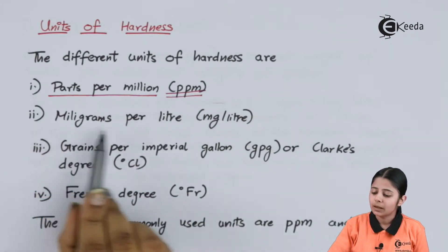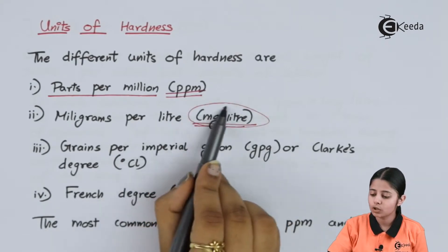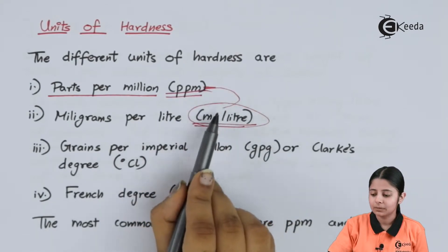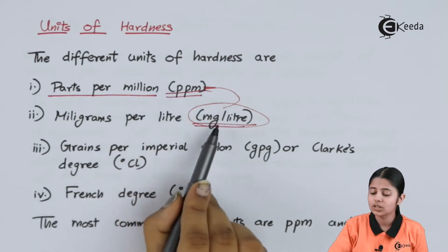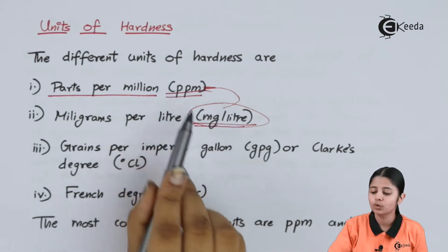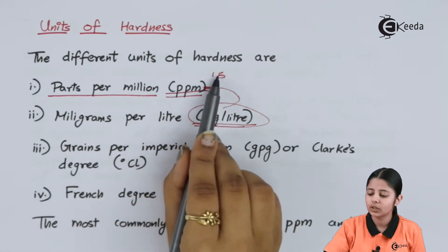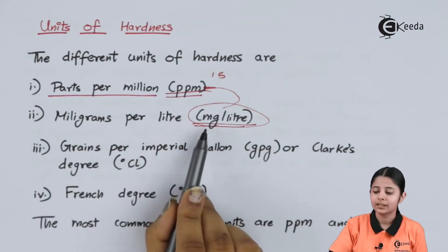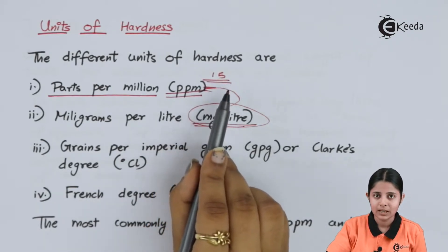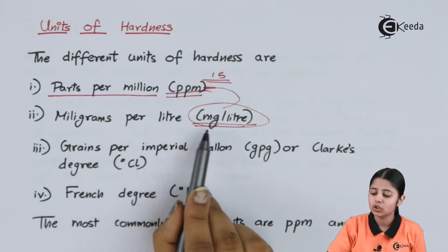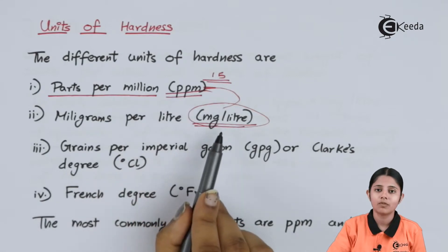Next I have milligrams per liter, which is mg/L. MgL also corresponds to PPM — both units are so similar that they correspond to each other. For example, 15 PPM is the same as 15 mg/L hardness of Ca+ ions. Both of these boil down to the same values.